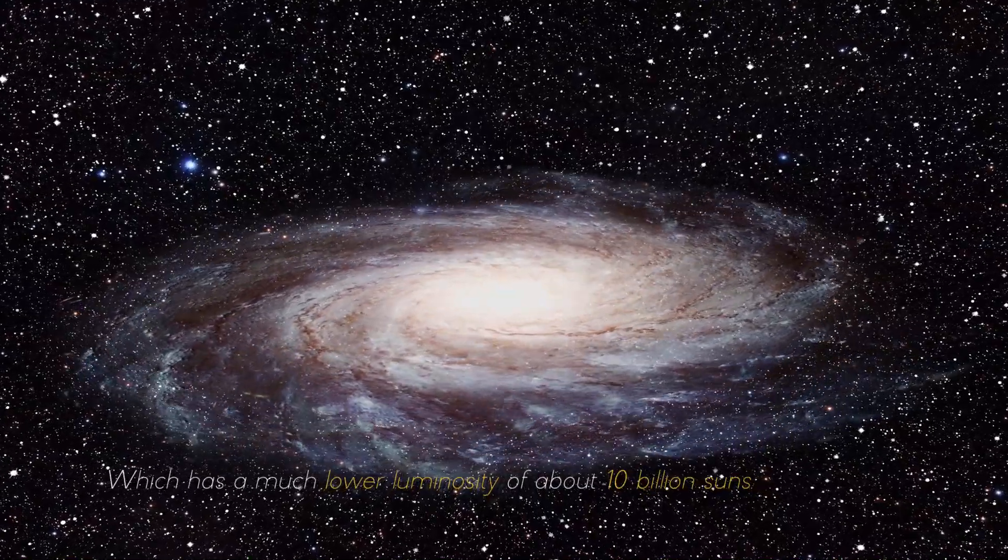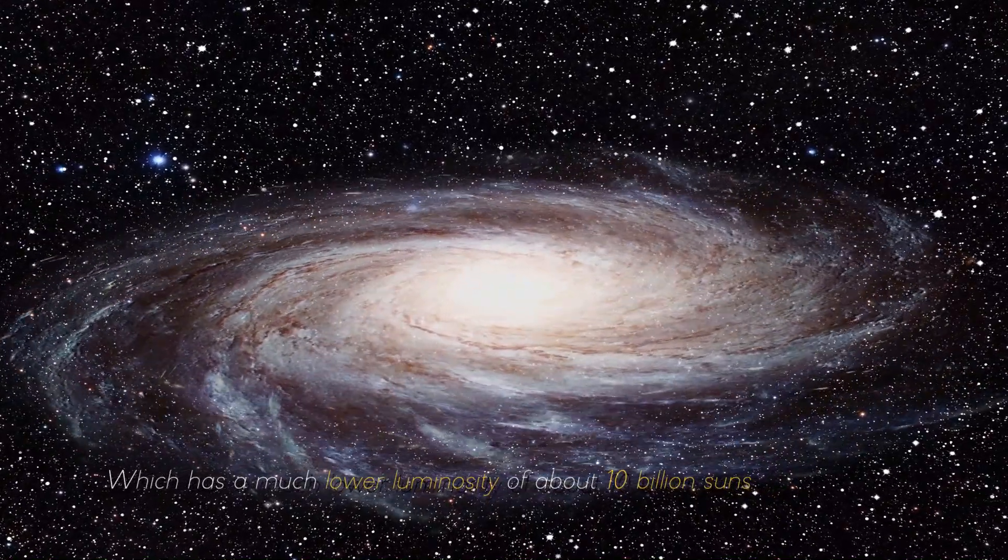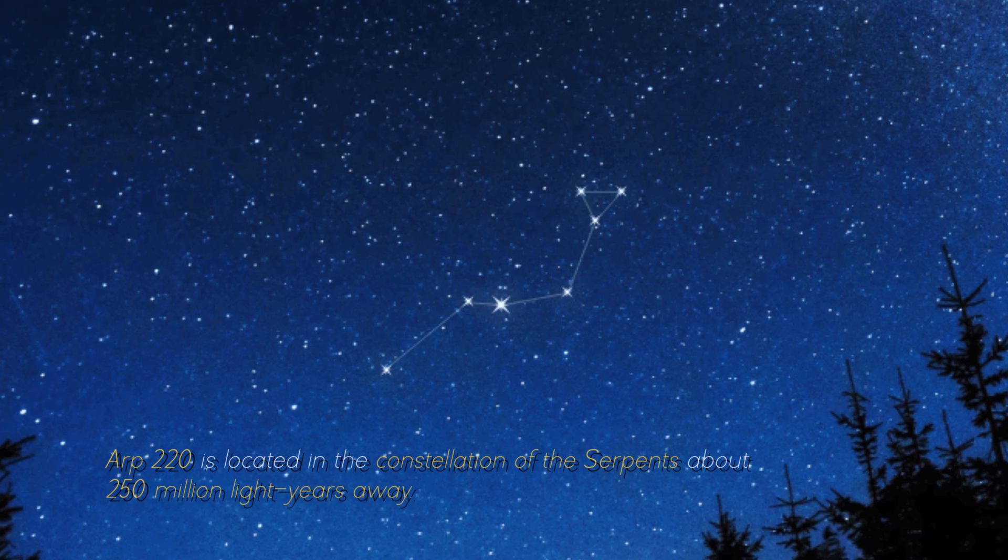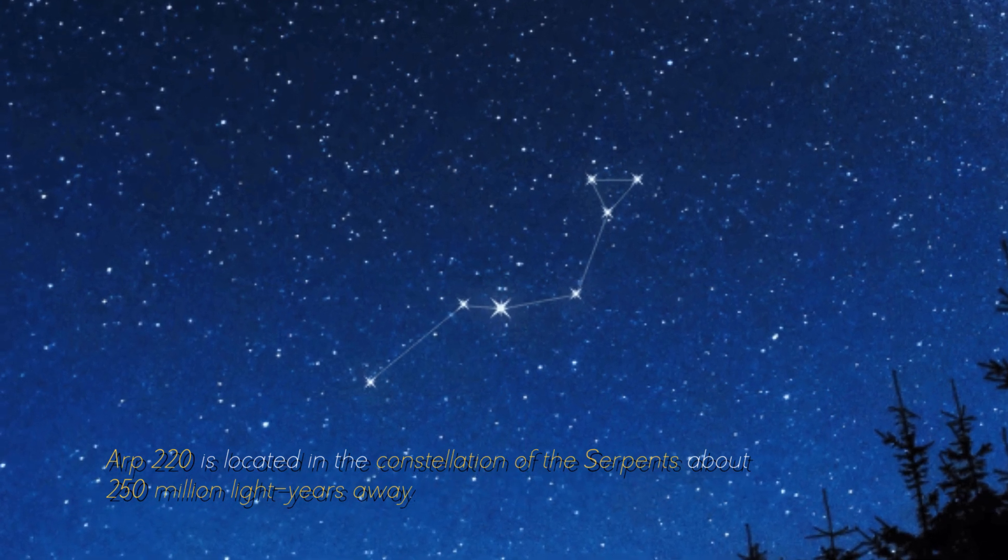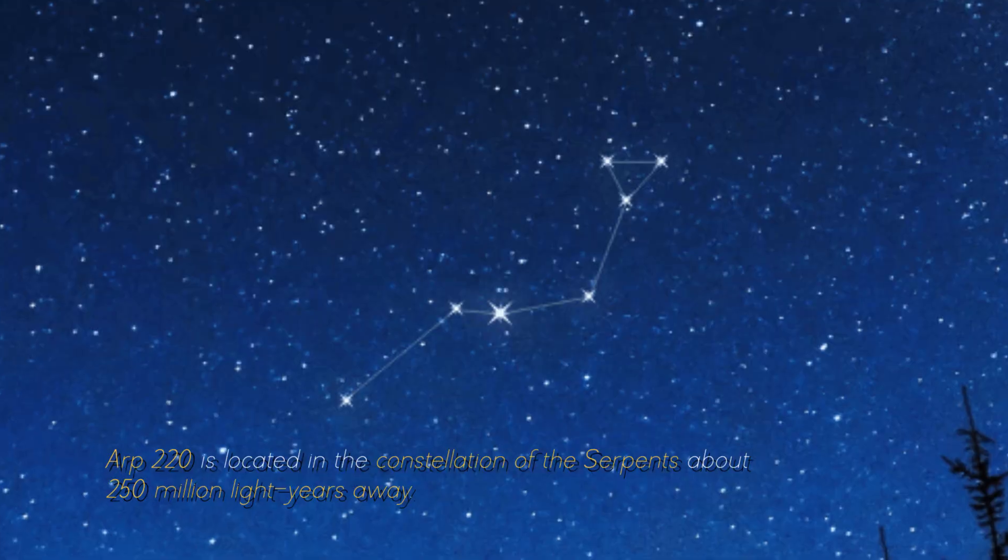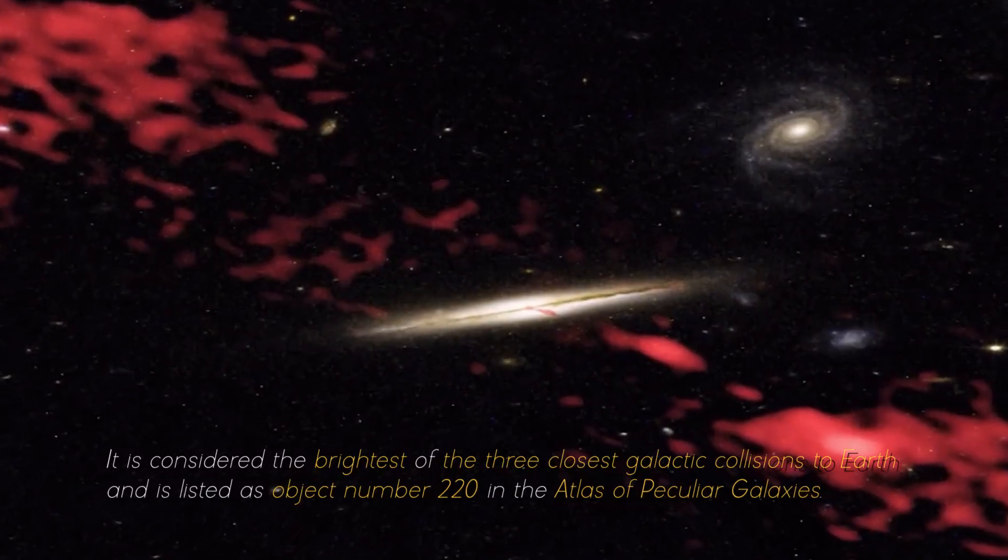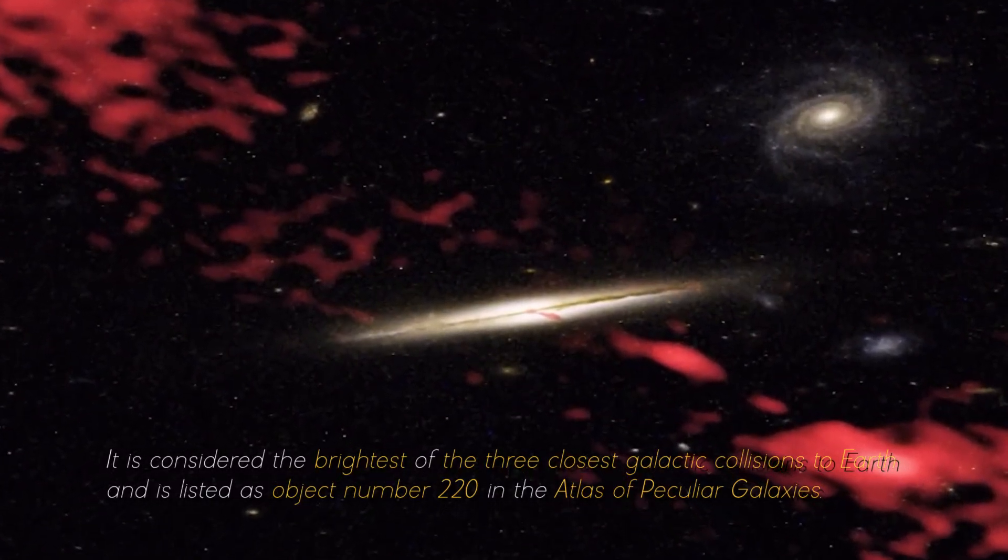ARP 220 is located in the constellation of the Serpents, about 250 million light-years away. It is considered the brightest of the three closest galactic collisions to Earth.